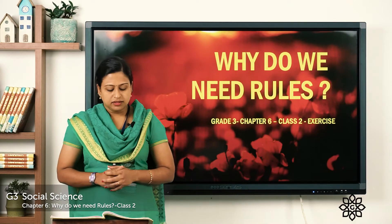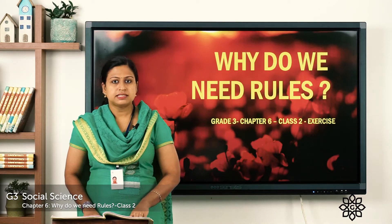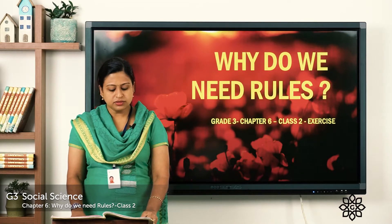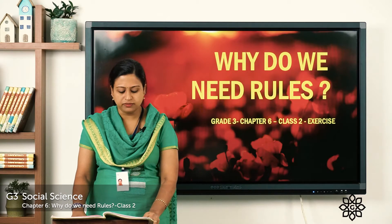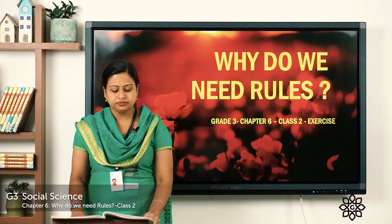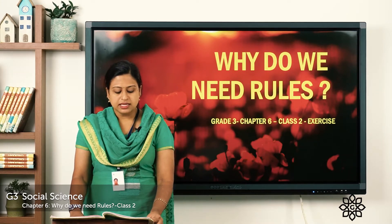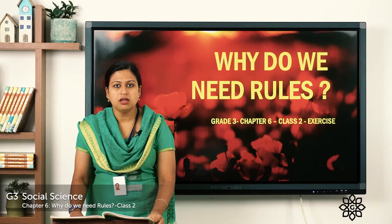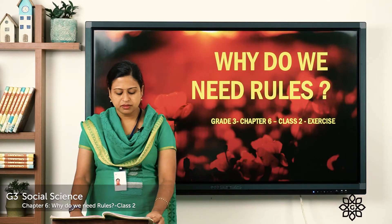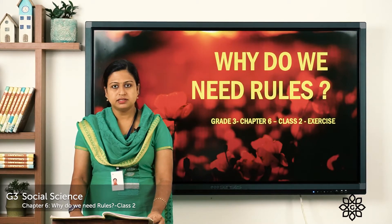Now let's move to the first exercise: tick the correct options. Three options are given and you have to select the correct one. First, we must cross the road when the traffic light is — options: green, red, yellow. Second, when we break a rule we are — options: praised, punished, given good marks. Third, laws protect us from — options: sadness, harm, happiness. Fourth, by following laws we help our country to — options: be unfair, progress, fail. Fifth, people who make laws for the country are called — options: teachers, parents, leaders.